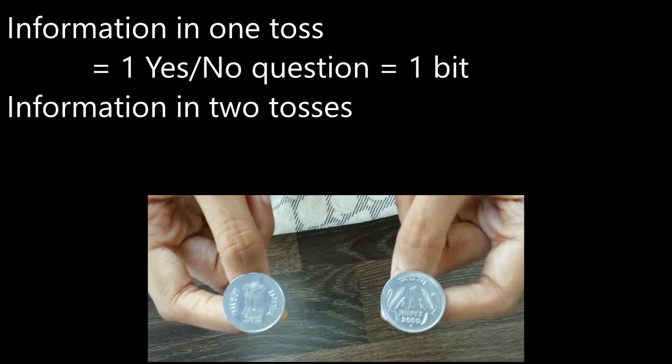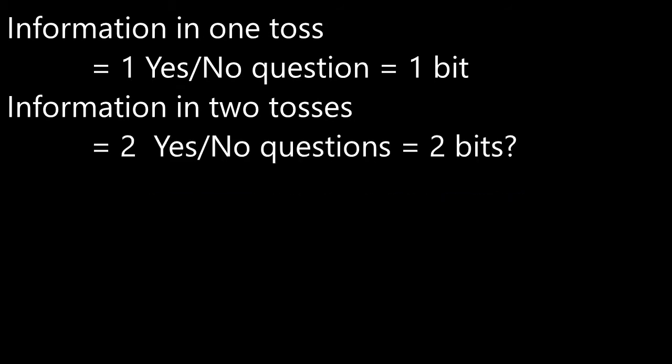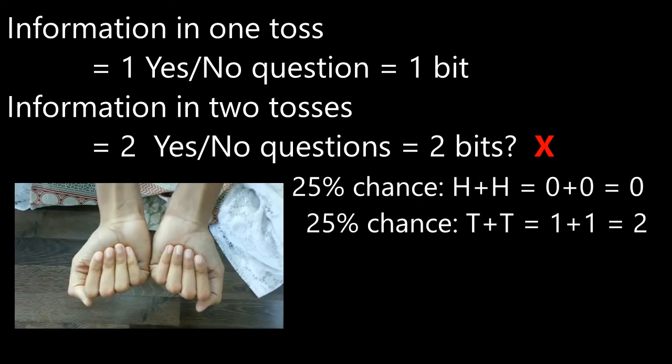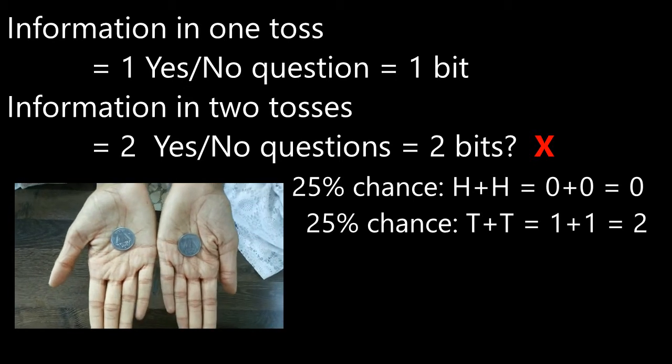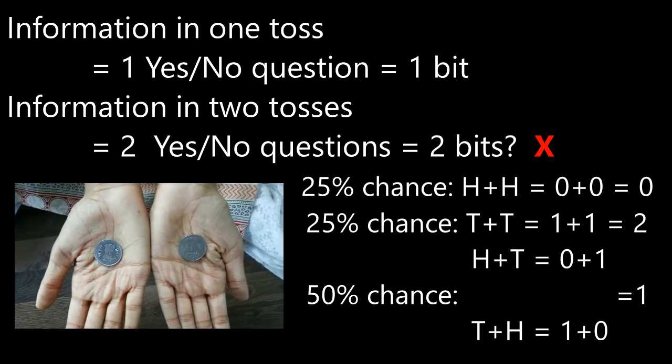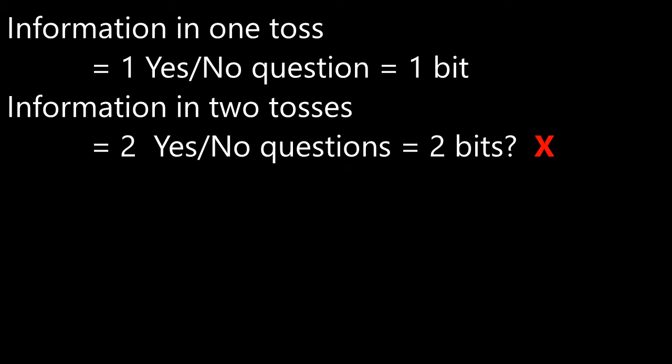If I flip 2 coins, will that double the information to 2 questions, 2 bits? Not quite. There is a 25% chance of getting heads heads, which is 0. 25% chance of tails tails, or 2. And a 50% chance of 1, as heads tails or tails heads. You could first ask,